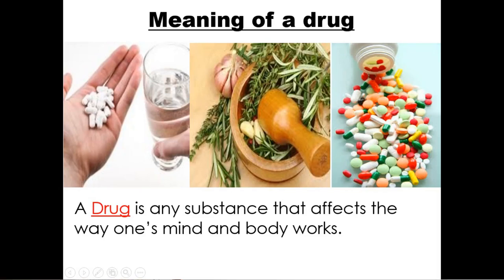Any substance that affects the way one's mind and body works if it's taken. It can either increase or decrease the function of your body. We have different types of drugs that come in different shapes — some are syringes, capsules, sachets, and so many others. Drugs can also be like plants — those are also part of drugs. Some of them are medicinal; when you take them, they affect your mind and how it works.